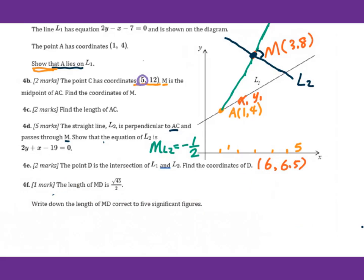For F, the length of MD is √(45/2). Write down the length of MD correct to 5 significant figures. When you put it into graphing calculator, you get 3.354101. Five significant figures: you count from the left side 1, 2, 3, 4, 5. Then decide round up or round down. Since this is less than 5, round down. You will get 3.3541.